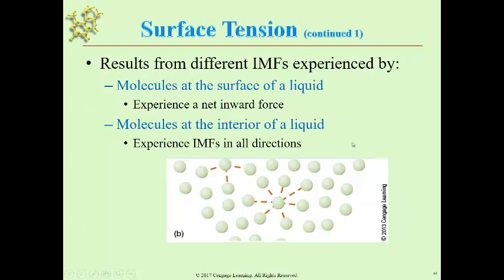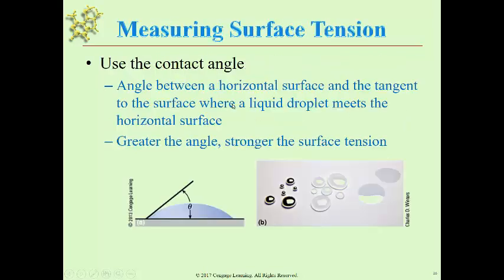The way this works is the intermolecular forces on the interior create many more connections and interactions than on the surface. So there's a net downward force where the particles on the surface want to be on the interior. Literally, the surface area of the liquid becomes less because more particles want to be on the inside. That's how surface tension is created.